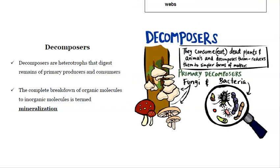Decomposers are heterotrophs that digest the remains of primary producers and consumers. The complete breakdown of organic molecules to inorganic molecules is called mineralization. Decomposers are typically fungus and bacterial species.